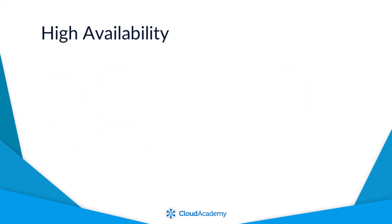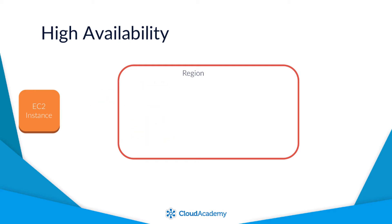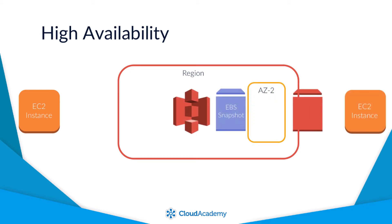Looking at the subject of high availability and resiliency, your EBS volumes by default are created with reliability in mind. Every write to your EBS volume is replicated multiple times within the same availability zone of your region to help prevent the complete loss of data. This means that your EBS volume itself is only available in a single availability zone. As a result, should your availability zone fail, you will lose access to your EBS volume. Should this occur, you can simply recreate the volume from your previous snapshot, which is accessible from all availability zones within that region, and attach it to another instance in another availability zone.